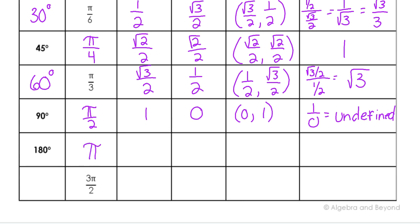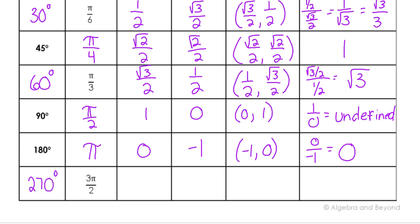180 degrees is halfway around, which is pi in radians. On the negative x-axis, the y-coordinate is zero and the x value is negative one. So the point is (negative one, zero) for 180 degrees, and zero over negative one gives a tangent of zero. Then three pi over two — that's three quadrants, which is 270 of the 360 degrees in a whole circle. That goes straight down from the origin, so its y value is negative one and its x value is zero. The point is (0, negative one), and negative one over zero is again undefined. So the tangent of 270 degrees is also undefined.